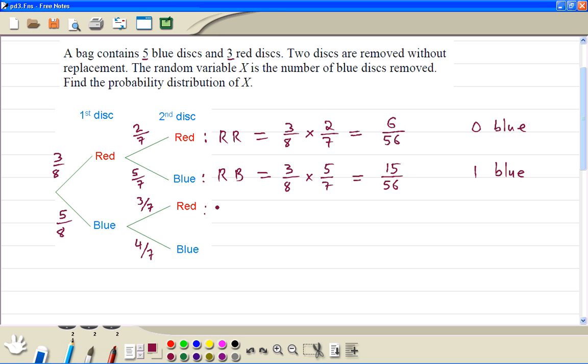So the first one blue, then red would be 5 divided by 8 times 3 divided by 7, is also 15 out of 56, and it's also 1 blue. Finally we got blue, then blue again, 5 divided by 8 times 4 out of 7, the answer is 20 out of 56, and this represents 2 blue.